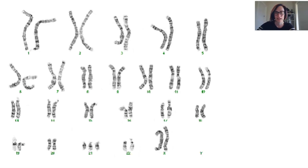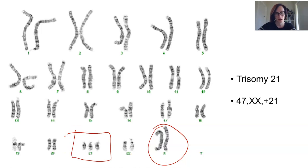For example, here is a karyotype that we can assume is a biological female. Here we see the two X chromosomes. This person, however, would have Down syndrome. They have trisomy 21 right there. So that would be their karyotype, 47XX plus an extra 21.